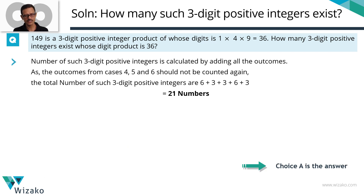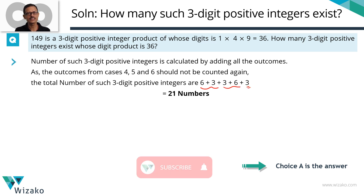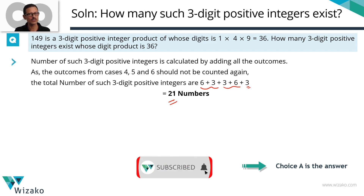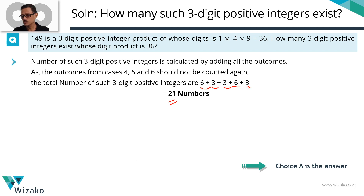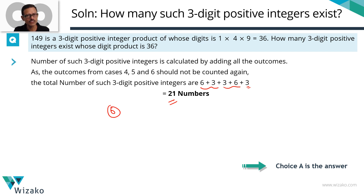Tallying up the results: Case 1 gave 9 outcomes, Case 2 gave 9 outcomes, and Case 3 gave 3 outcomes. The total is 9 + 9 + 3 = 21 three-digit positive integers whose product of digits equals 36. As mentioned, in the real GMAT exam you'll likely face a question with only 3 or 4 possibilities, solvable in about 2 minutes — but this framework still holds good.